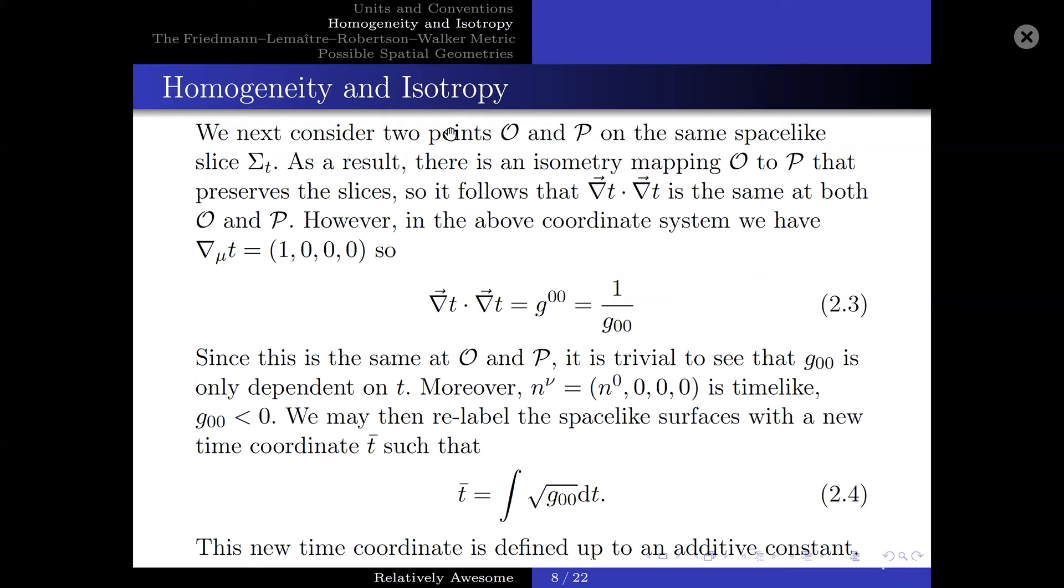Next, we consider two points O and P on the same spacelike slice Σ_t. As a result, there is an isometry mapping between O and P that preserves the slice. So it follows that ∇t · ∇t is the same at both O and P. However, in the above coordinate system we have the covariant derivative of t is equal to (1, 0, 0, 0). So ∇t · ∇t is equal to the inverse component of g^00. Since this is the same at O and P, it is trivial to see that g_00 is only dependent on time.